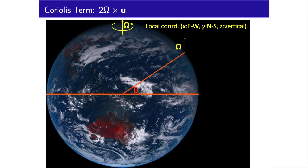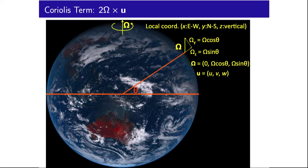Consider the rotation vector omega at some latitude theta. In the local coordinates, components of the rotation vector omega are sine with latitude in the vertical, and cosine with latitude in the north-south direction. As the rotation vector is orthogonal to the east-west direction, there is no east-west component to omega.